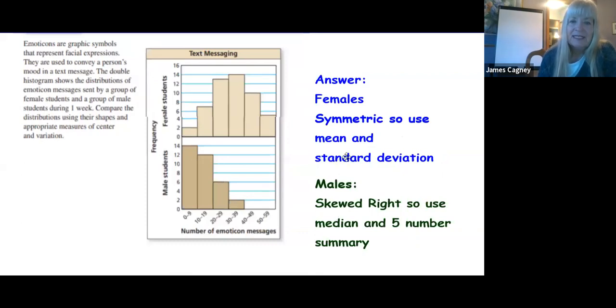The answer to this is the females are symmetric, so I would use the mean and the standard deviation. The males are skewed right, so I'm going to use the median and the five-number summary.